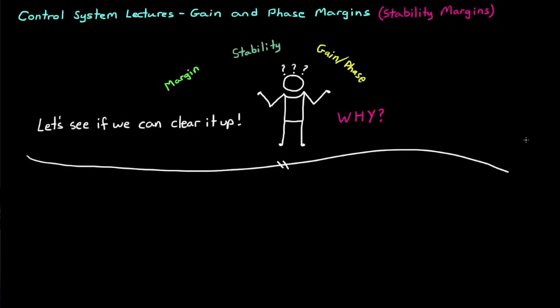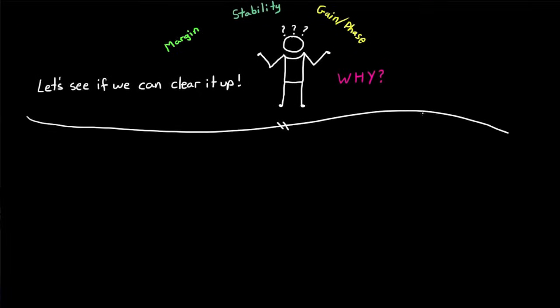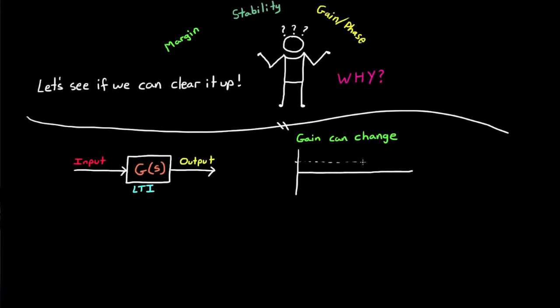Before we can understand gain and phase margin, we first need to understand gain and phase. I covered this in the first few minutes of the introduction to Bode plots video, but I'll sum it up here for completeness. Let me draw a linear time invariant system, G, which acts on an input and generates an output. When a sine wave is played through it, it's distorted based on the properties of G. That distortion for an LTI system comes in two ways.